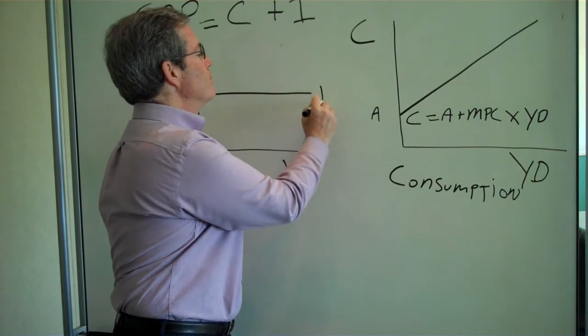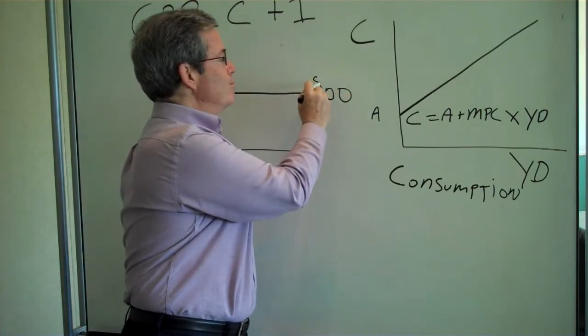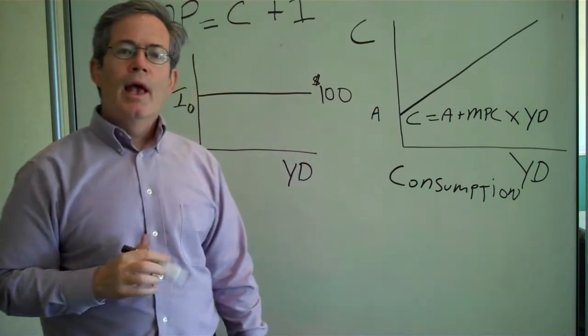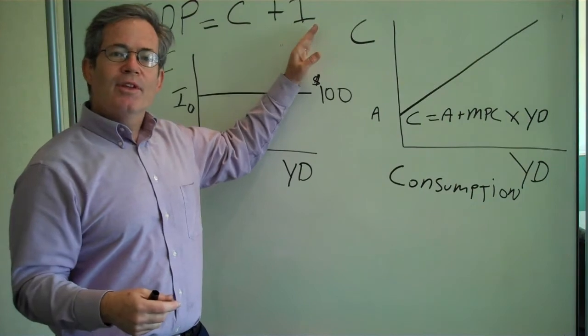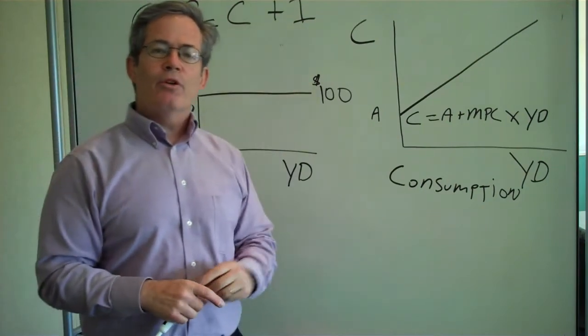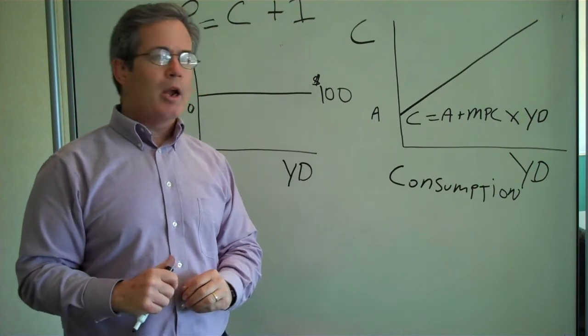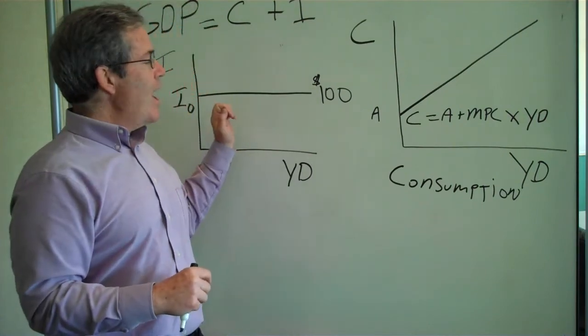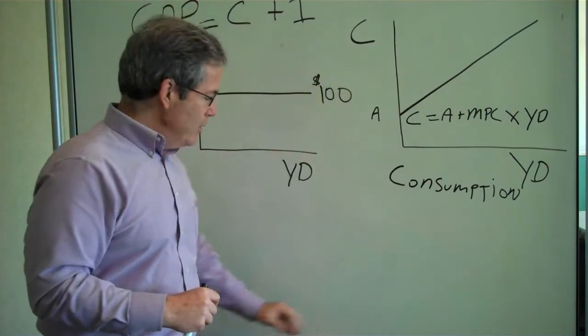Say, a hundred dollars. Now, the next thing that we want to do is add these two things together to get a picture of how much spending there is in our economy. So what we want to do is add investment to consumption. How do we do that?